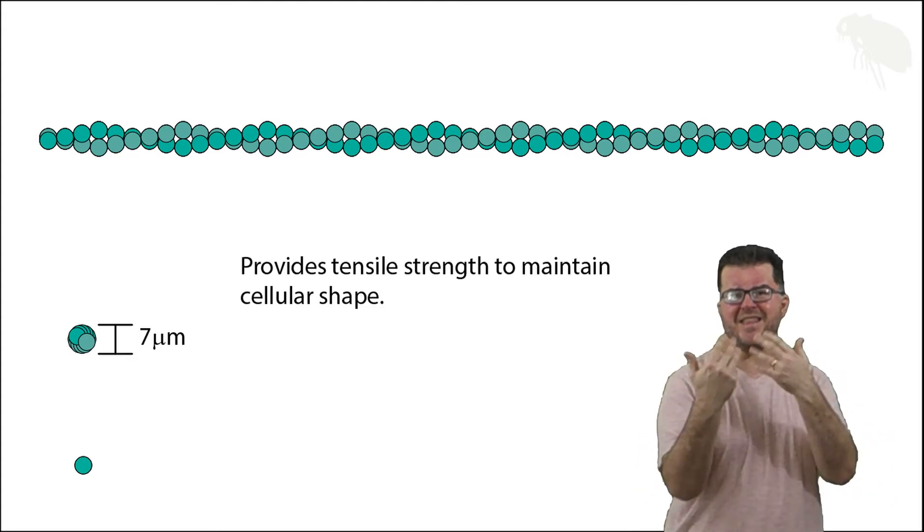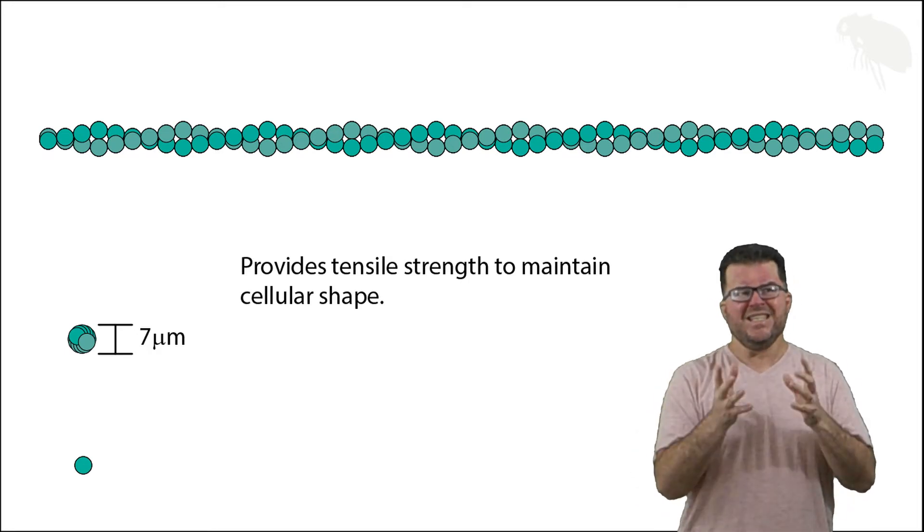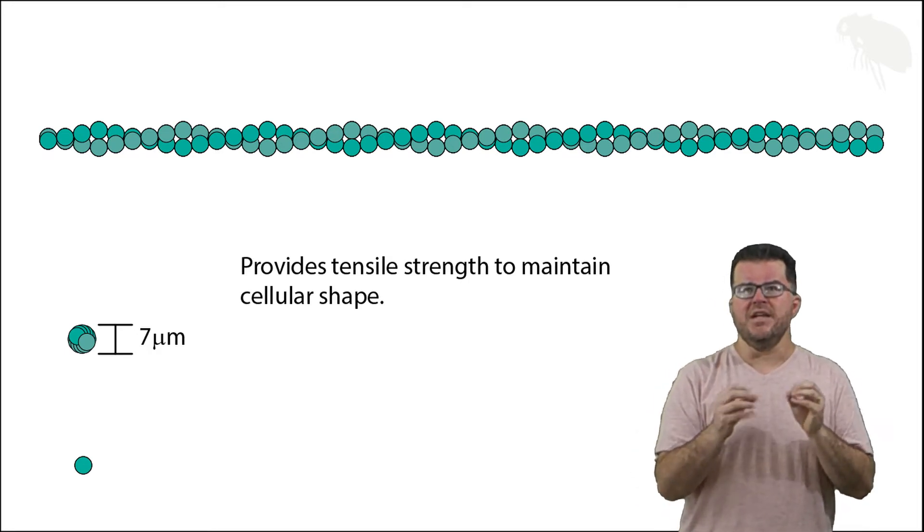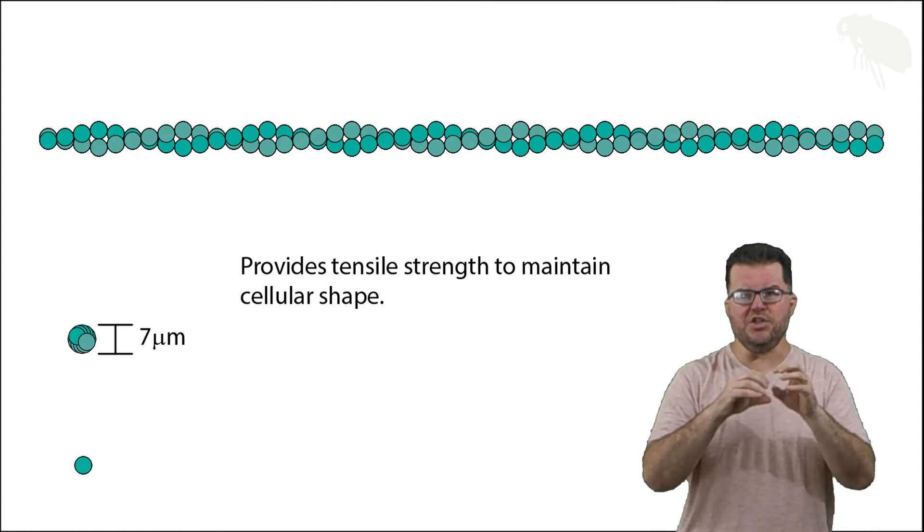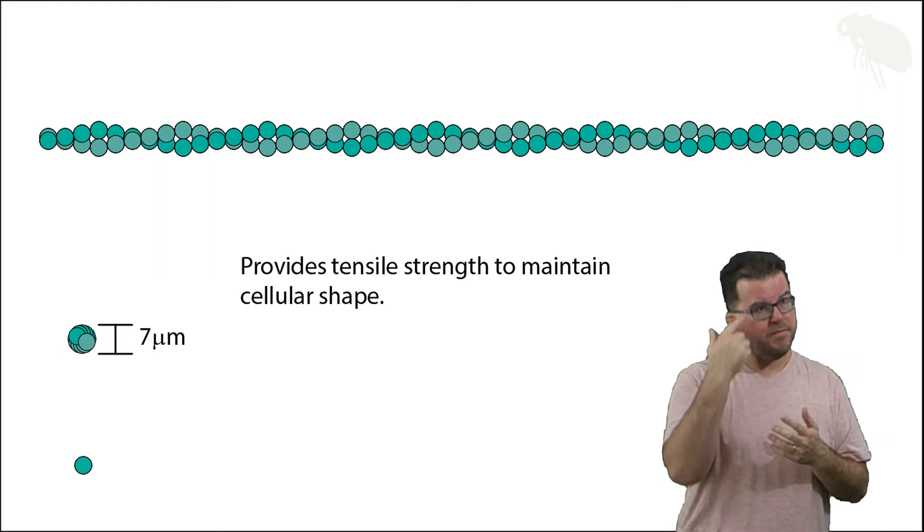Let's start with microfilaments have a high tensile strength and they convey that to the cell membrane when they're associated with the plasma membrane. Tensile strength in simplest terms essentially represents their ability to withstand stretching and compression.